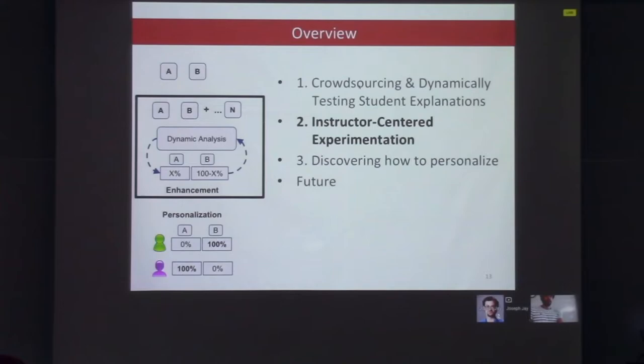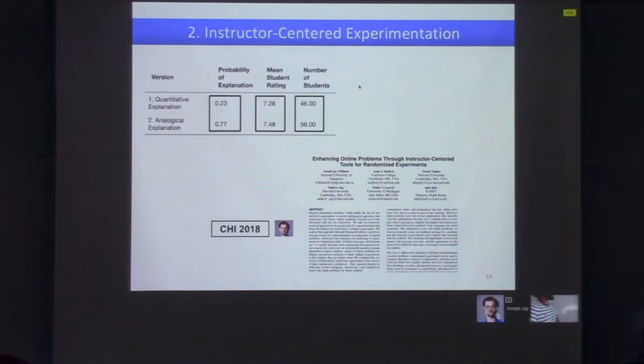The second line of work is instructor-centered experimentation. We let instructors use the system to A/B test which explanations they give students. Based on ratings, the system learns which explanations are higher rated. Instructors were excited that this research actually helped their students—A/B testing can improve instruction, what one student says helps the next, making A/B tests more practical.